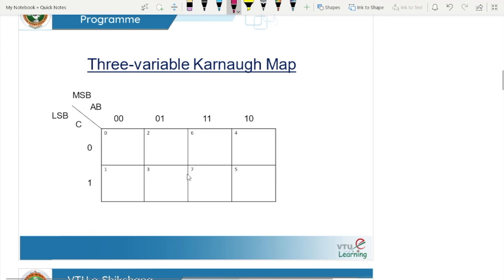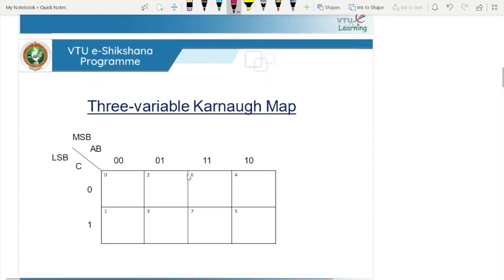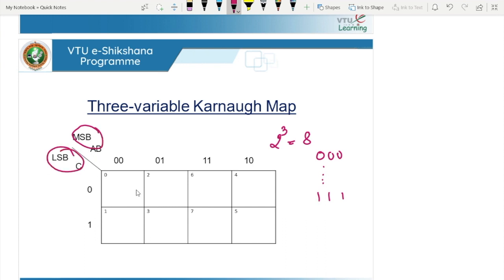This is the 3-variable K-map. Since it is 3 variables, we have 2 to the power of 3, that is 8 squares. These 8 squares give combinations from 000 to 111. This side is MSB and this side is LSB. The first square is 000, second is 001, next is 010, then 011, 100, 101, 110, and 111.